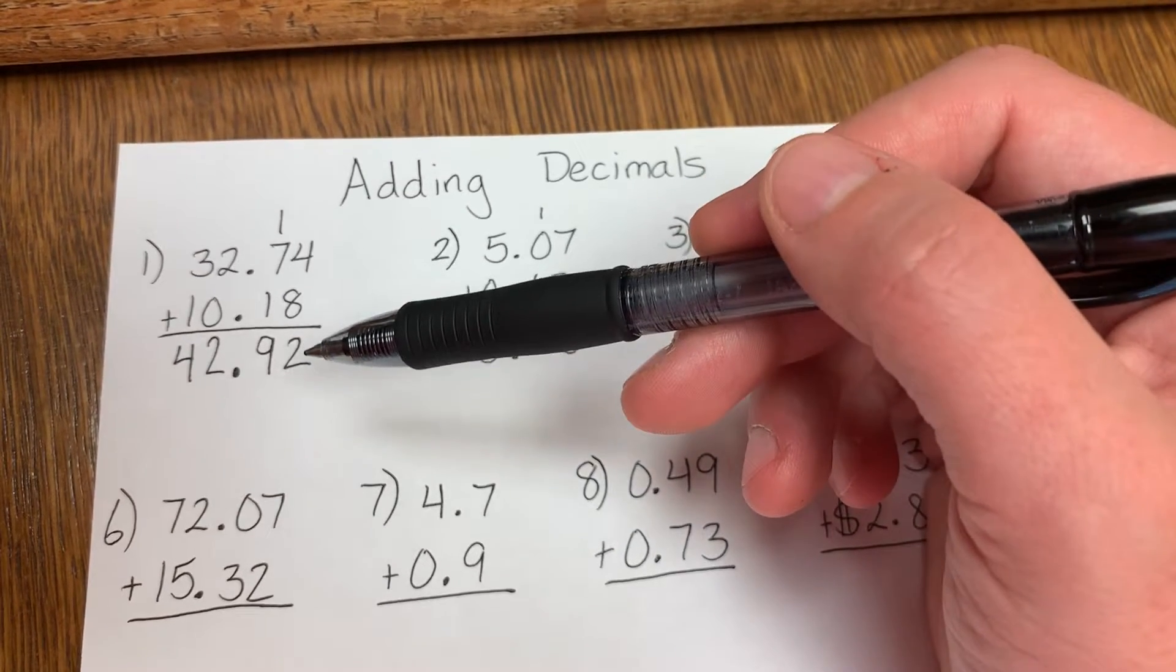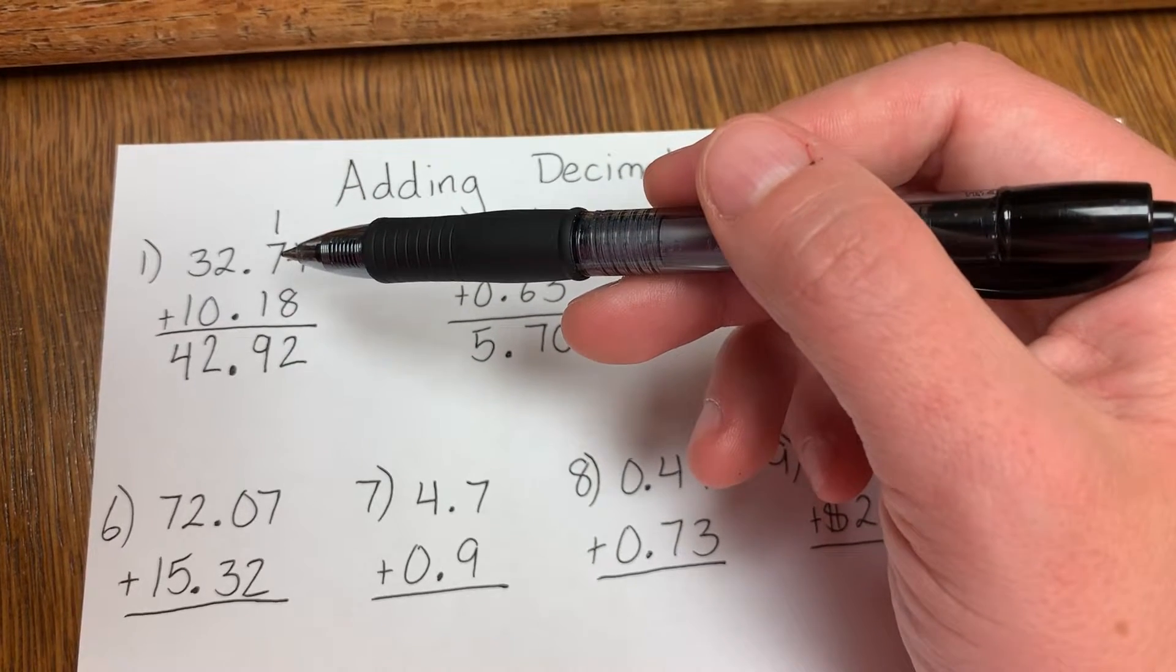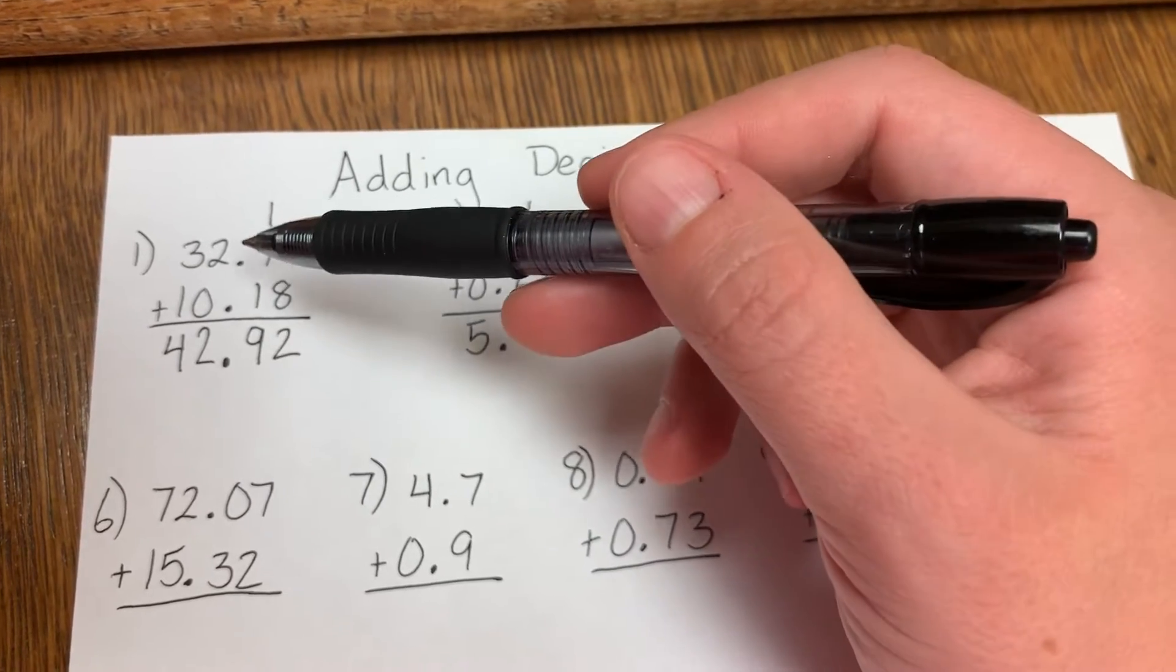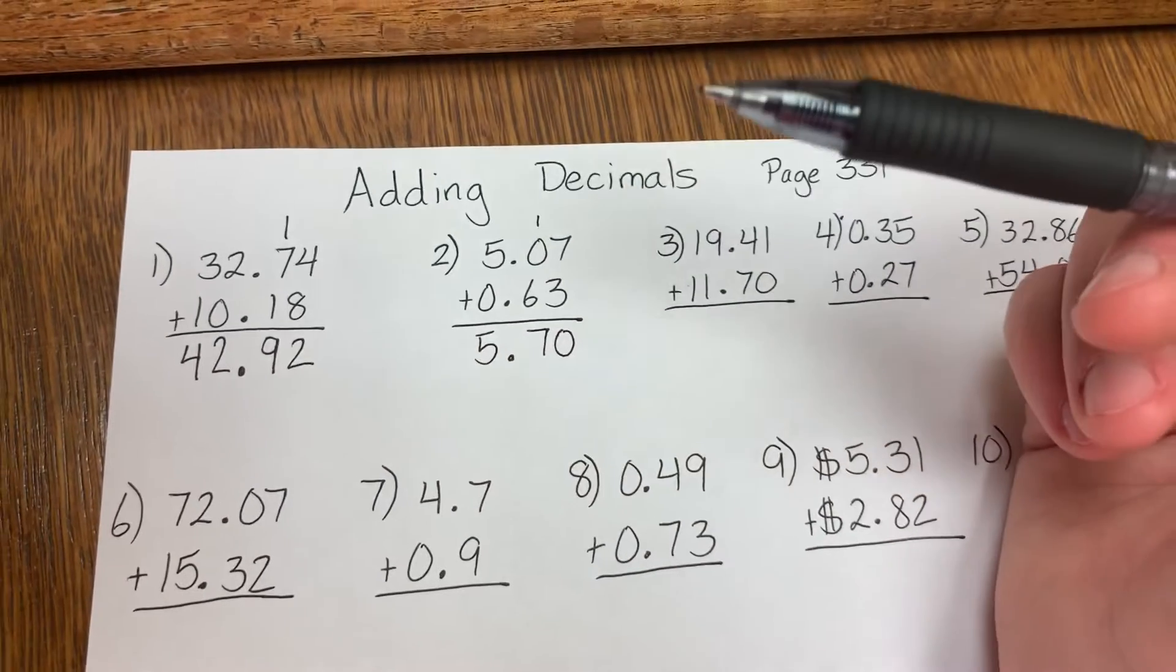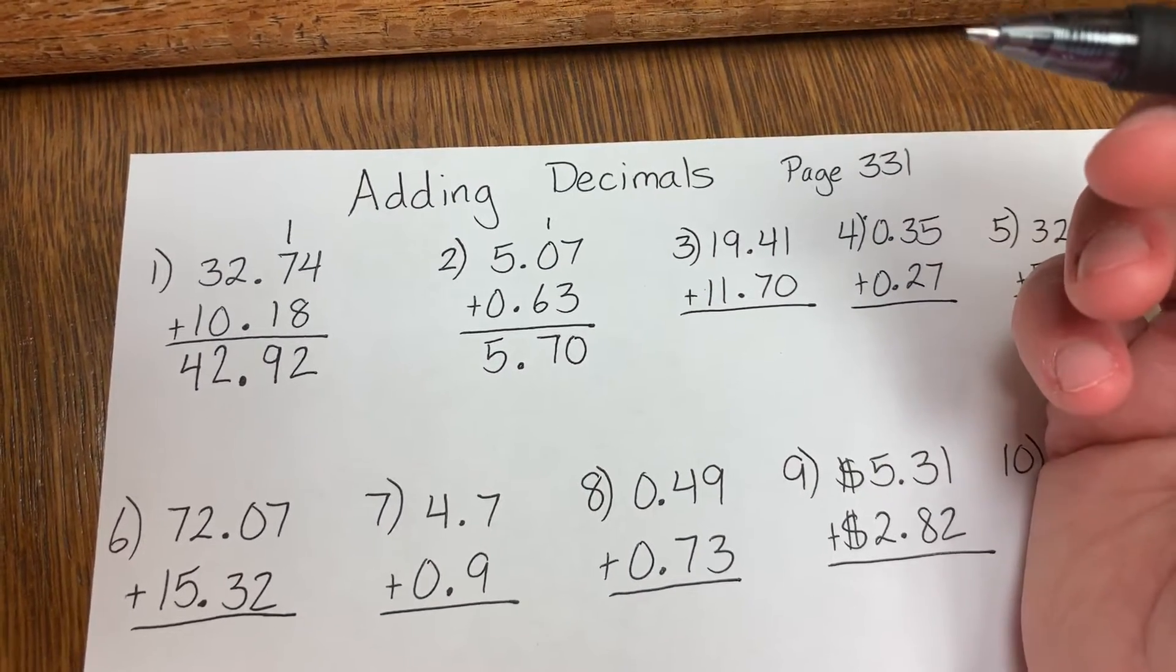Okay, so 4 plus 8 is 12. 2 down, carry the 1. 1 plus 7 is 8, 8 plus 1 is 9. Bring down your decimal. 2 plus 0 is 2, 3 plus 1 is 4. So your answer is 42.92 or 42 and 92 hundredths.